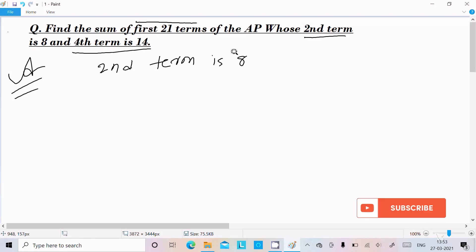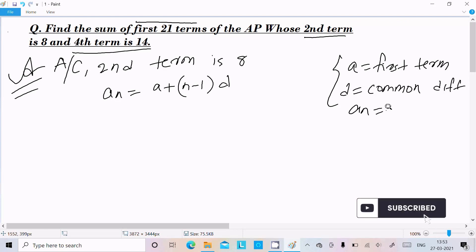According to the question, we know the formula: a_n = a + (n-1)d, where a is the first term, d is the common difference, and n is the nth term. Here, the second term is given.